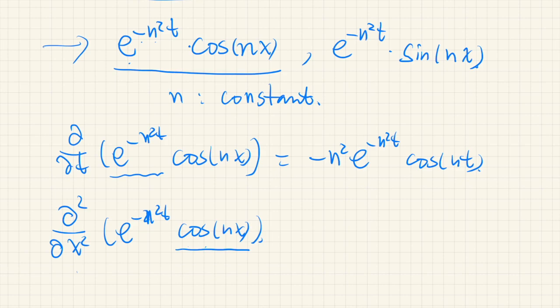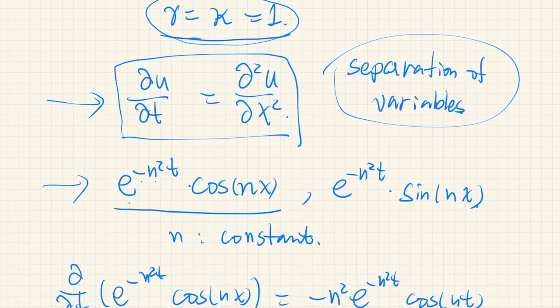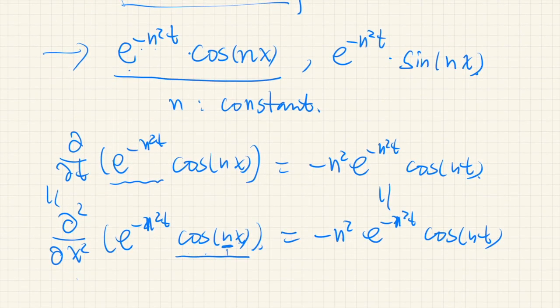But we have a scaling factor of x inside cosine. So that will come out twice. So that would be negative n squared and n squared t and cosine nx. And so they are equal. Therefore, this is equal to this. That means we have this partial differential equation. Therefore, this is a solution. And you can do the same thing for this sine part.